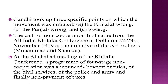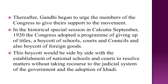The four stages included boycott of titles, the civil services, the police and army, and finally non-payment of taxes. Gandhi then began to urge the members of the Congress to give their support to the movement. In the historic special session in Calcutta in September 1920, the Congress adopted a program of giving up titles, a boycott of schools, courts, and councils, and also boycott of foreign goods — that was Bahishkar. This boycott would go side by side with the establishment of national schools and courts to resolve matters without recourse to the government's judicial system, and the adoption of Khadi.